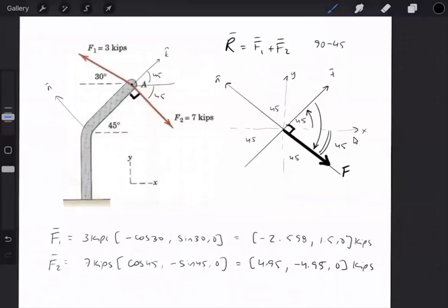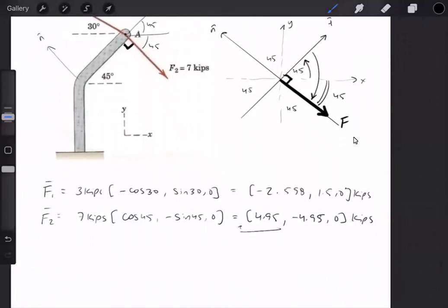So adding these together, x and y give us the values of 2.35 and negative 3.45. So the vector that we were asked to define, F1 plus F2, is 2.35 and negative 3.45 kips.